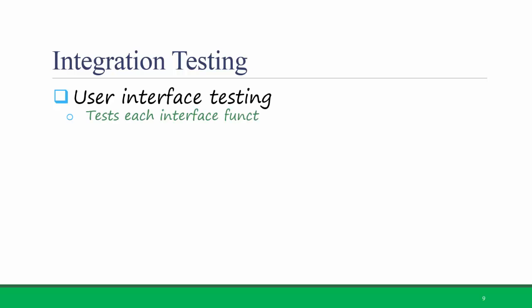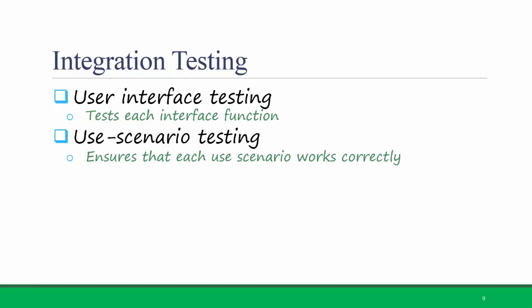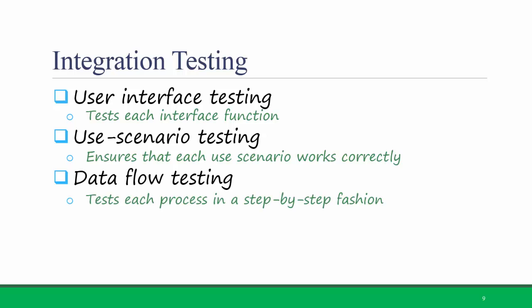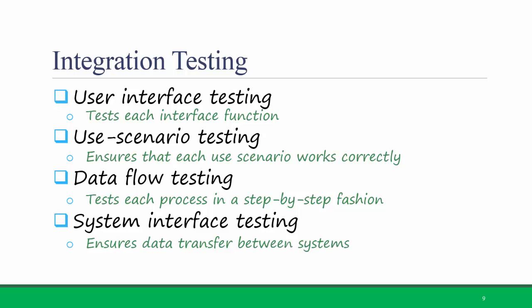There's user interface testing, which tests each interface function. Use scenario testing, which ensures that each use scenario works correctly. Data flow testing, which tests each process in a step-by-step fashion. This is often taken from the data flow diagrams. And there's system interface testing, which makes sure that data transfer between separate systems happens smoothly.